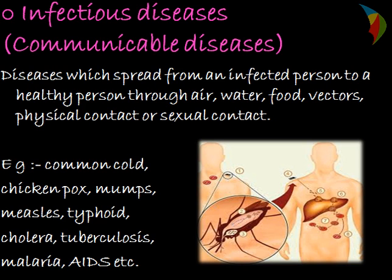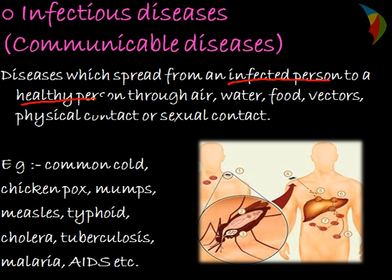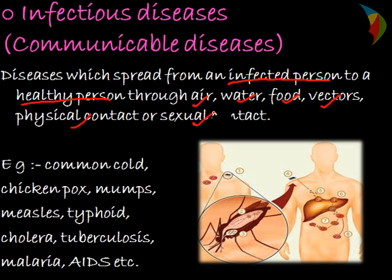Next are infectious diseases, also called communicable diseases — diseases which spread from an infected person to a healthy person. Many infectious agents are responsible, transmitted through air, water, food, vectors, physical contact, or sexual contact. For example, a mosquito carrying Plasmodium, which causes malaria, bites a healthy person.